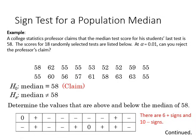Here's an example where we can apply those steps. A college statistics professor claims that the median test score for his students' last test is 58, and the scores for 18 randomly selected tests are listed below in this set of data. At the alpha 0.01 level, can we reject the professor's claim?